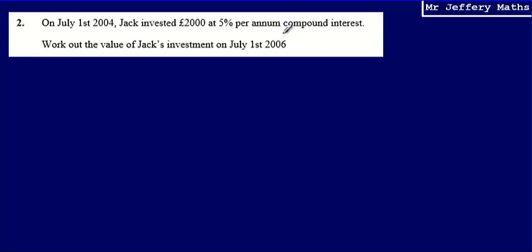So when we're asked to work out compound interest, the first thing to do is to take the amount. So the amount that we've got is £2,000.